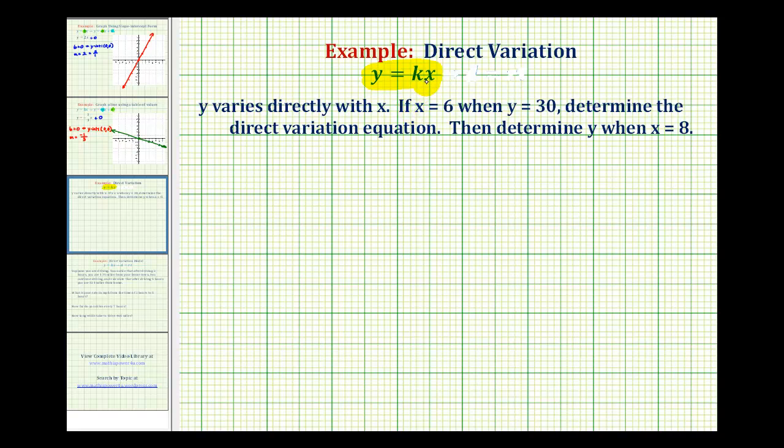The first step is to determine k since we know that x equals 6 when y equals 30. Using our direct variation equation, we're going to substitute 6 for x and 30 for y.